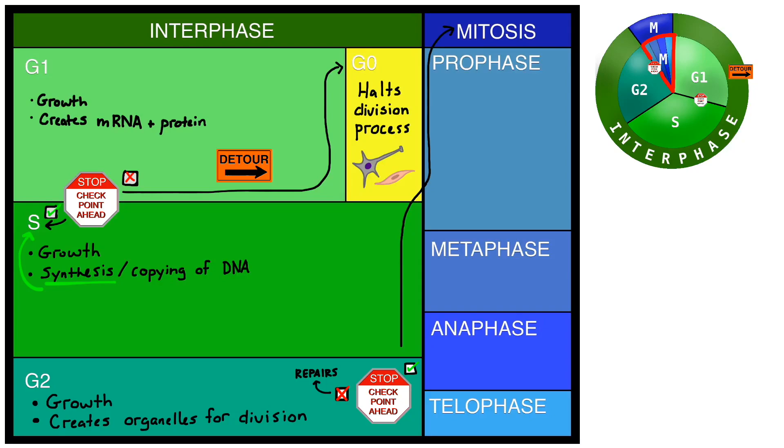We have now entered the M phase of the cell cycle. In prophase, the genetic material begins to condense. During metaphase, the chromosomes of genetic material align on the metaphase plate.